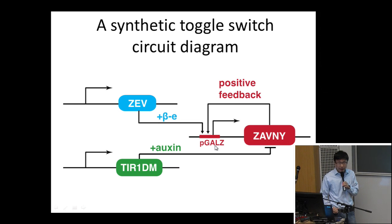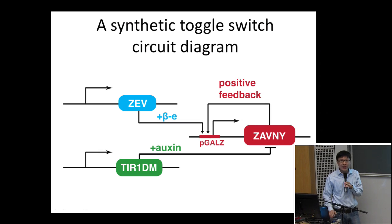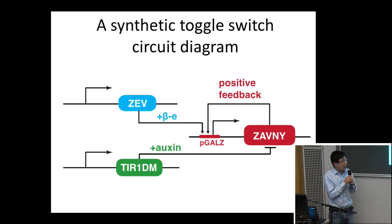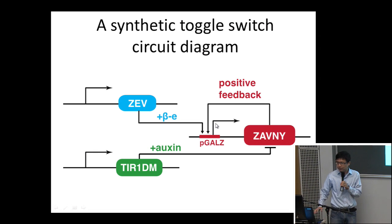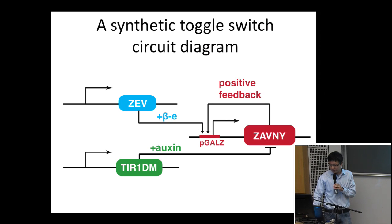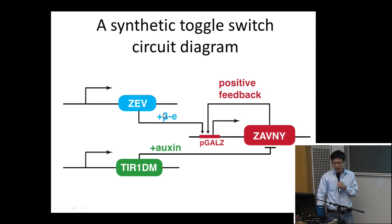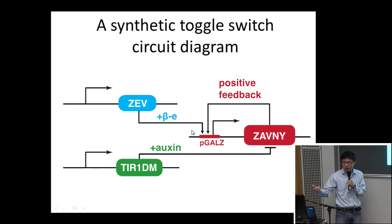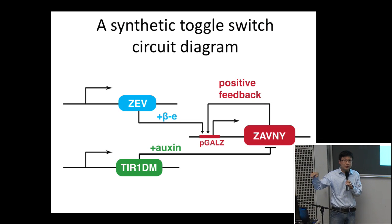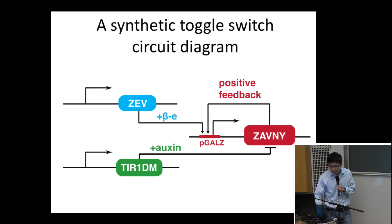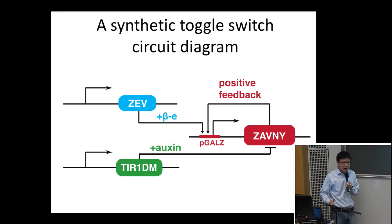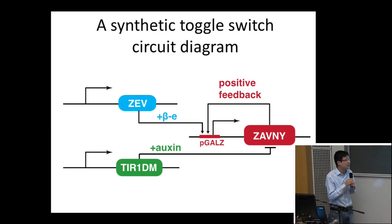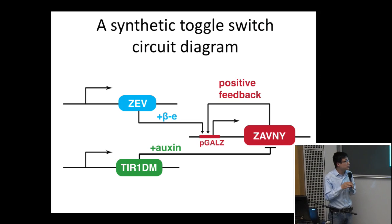When bound to the promoter called P-gal-Z, it can turn on expression of the protein called Zephny. Zephny is a protein I literally engineered to function as an activator that can bind to this promoter, forming a positive feedback loop — similar to the positive feedback loops in electronic circuits. Once Zeph activates the P-gal-Z promoter, Zephny forms a positive feedback loop that sustains its own production. We also have a mechanism to turn off production: a protein called Tier1-DM which, when bound by a plant hormone called auxin, can degrade Zephny.